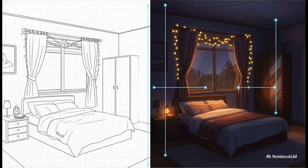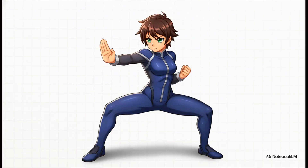Here's the result. We prompted for a cozy bedroom at night with Christmas lights, and just look at that. The AI completely reimagined the entire scene, but it stuck to the original layout perfectly. The bed is where the bed was, the window is in the same spot. That's total creative control.